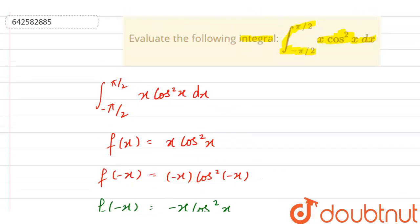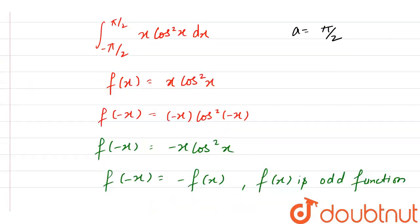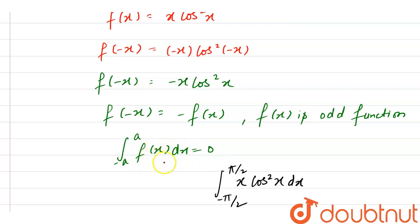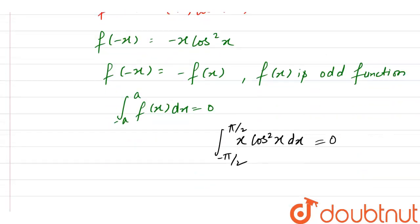Comparing with our given question, we can see that here a equals pi by 2, so we are integrating from minus pi by 2 to pi by 2. At place of f(x) we are having x cos squared x, which we have proved is an odd function. Therefore the whole value of this integral is equal to zero — that is the evaluated answer.